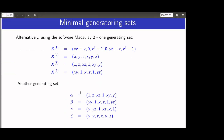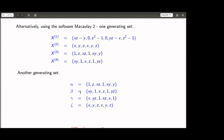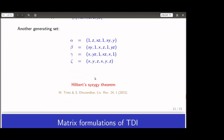Vector spaces have bases, but modules don't — they have generating sets. When we span the module the generators are linearly dependent, so you get relations between them. A very nice simple generating set was already found by Armstrong, Tinto, and Easterbrook; we gave it a rigorous mathematical formulation relating it to Hilbert's syzygy theorem.